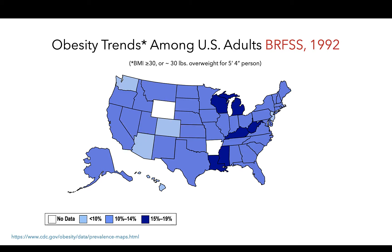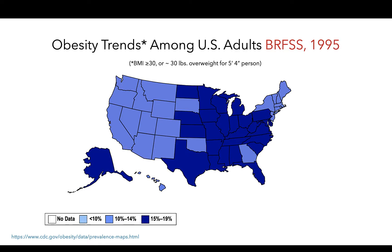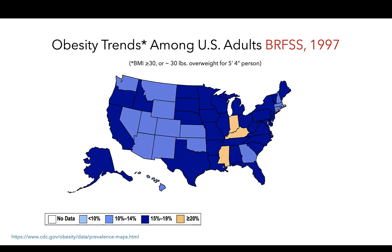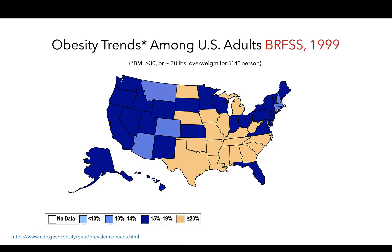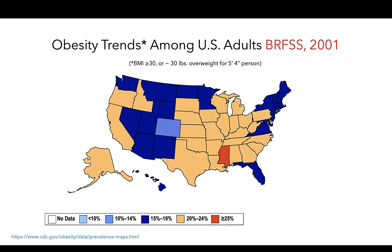Now as we advance through the 90s, we see additional darkening and additional data, with more and more states reporting 15 to 19% and now even some states with more than 20% of adults with a BMI classified as obese. As we progress to the 2000s, we see more and more states with 20 to 24% of adults with a BMI classified as obese, and one state reporting greater than 25% of their population had a BMI classified as obese.